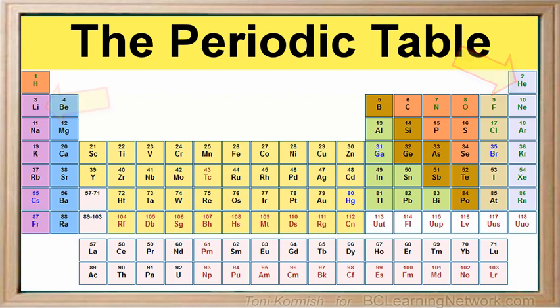The third element listed in the periodic table is the lithium atom and it has an atomic number of three, and so on. Now we know that the periodic table is organized by atomic number.